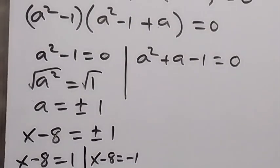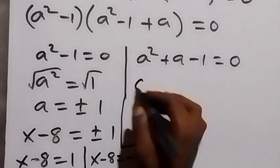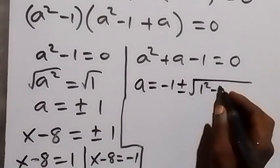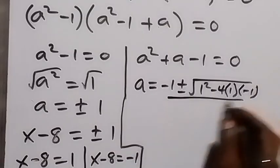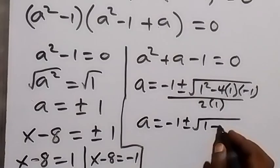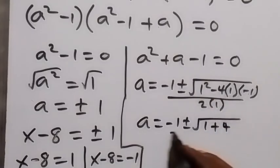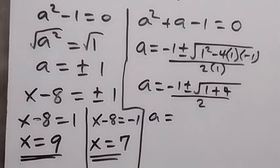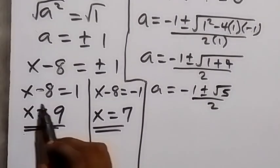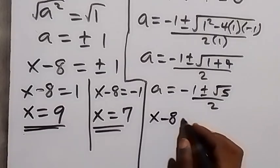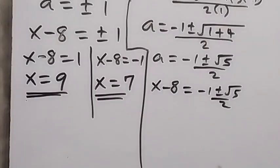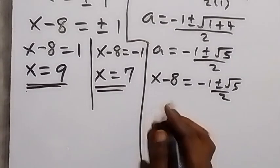Case 2: a squared plus a minus 1 equals 0. Using the quadratic formula, a equals minus b plus or minus square root of b squared minus 4ac, over 2a. Here b is 1, a is 1, c is minus 1, giving a equals minus 1 plus or minus square root of 1 plus 4, over 2, which simplifies to minus 1 plus or minus square root of 5, over 2.